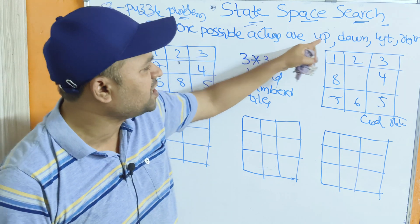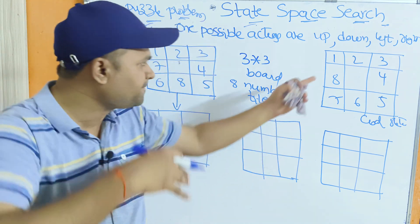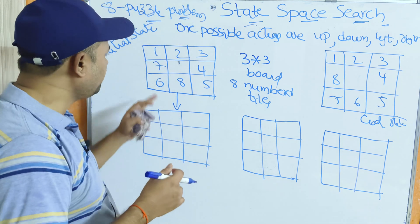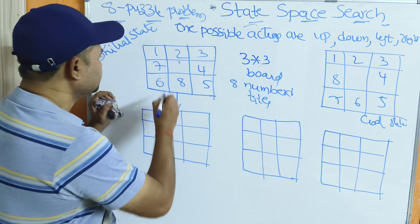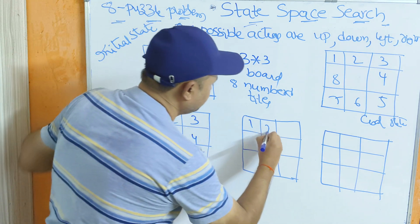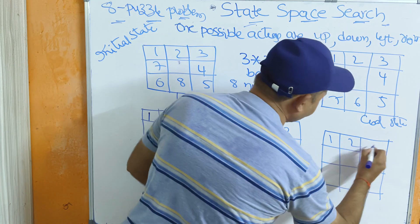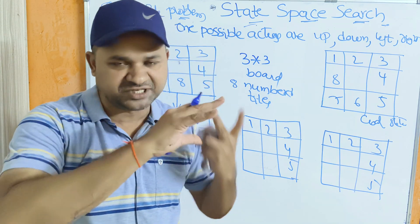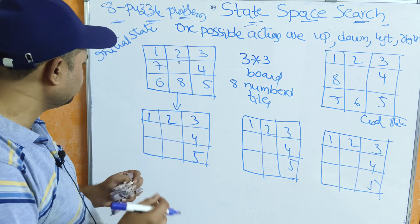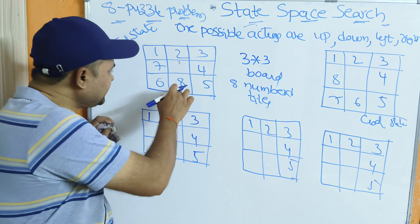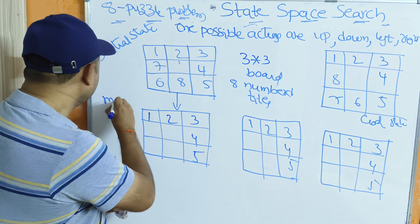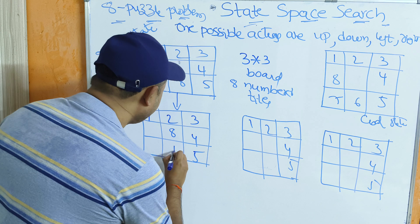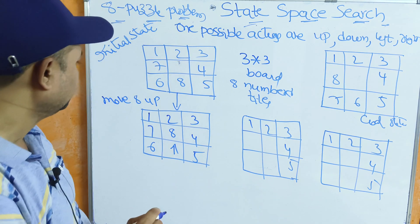On the 8-puzzle problem, the possible actions are: move a tile up, down, left, or right. In our example, tiles 1 through 5 are already in the same position in both initial and goal states, so there is no need to change them. We only need to change tiles 7, 6, and 8. First action: move tile 8 up — so 8 is moved up, remaining tiles stay the same.